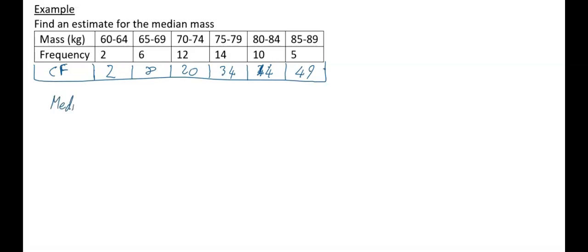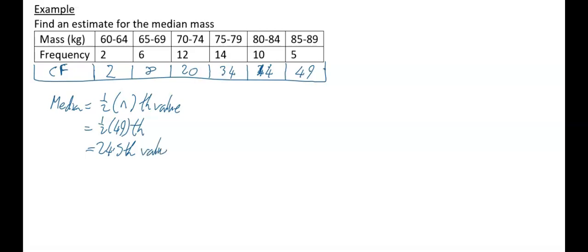To find the median position for a grouped frequency distribution, the median is the (1/2) × n th value — no '+1' needed for grouped data. So (1/2) × 49 = 24.5, the 24.5th value. We need to find where the 24.5th value falls.